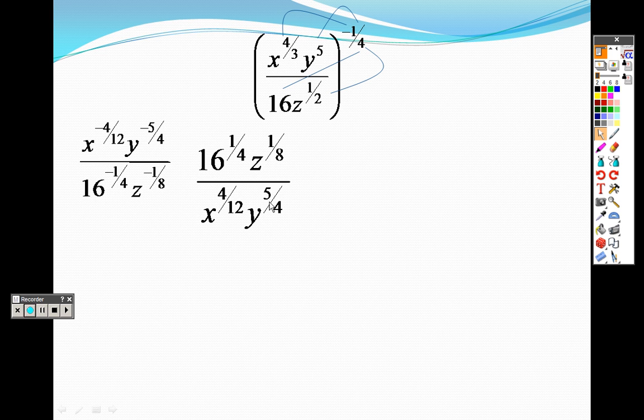And really, what the problem is, is this right here. So, it's improper. Let's change it into a mixed number. It goes in one time with a remainder of one-fourth. So, I get y to the one and y to the one-fourth.